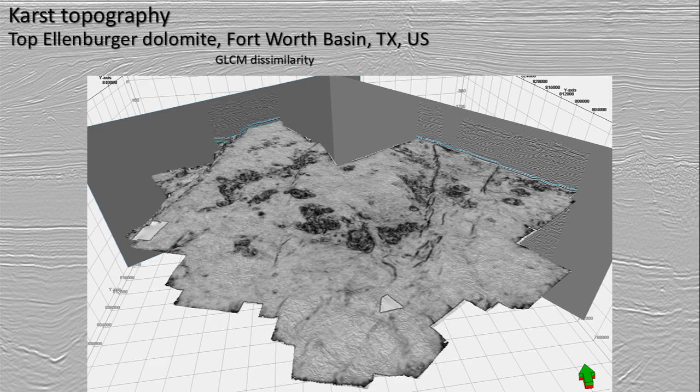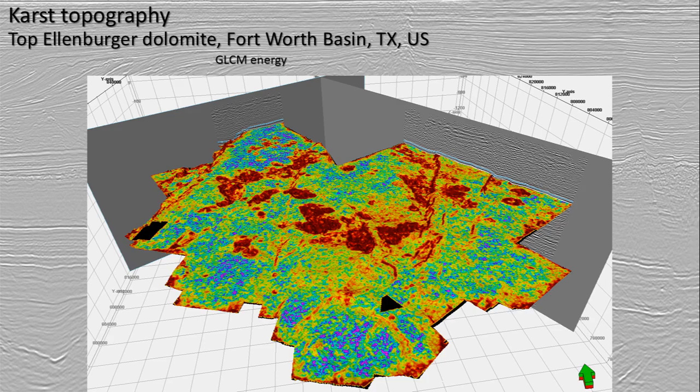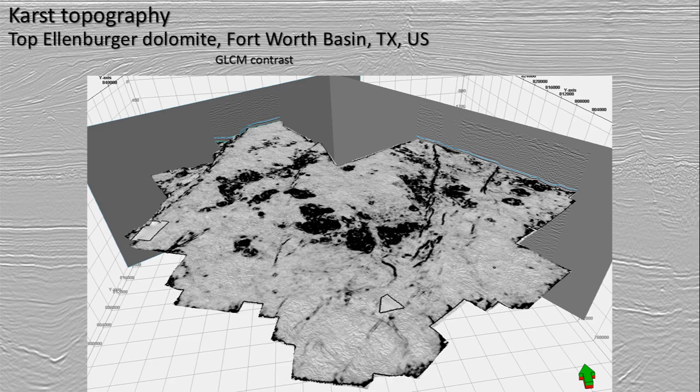You can also image karstic systems with texture attributes. This is the GLCM — the gray-level covariance matrix — dissimilarity attribute. And now this one is the GLCM energy attribute, and you can notice how those karstic sinkholes or caves really pop out with that dark red color. And now we have the GLCM contrast, showing us slightly different features in this system than the other GLCM attributes.